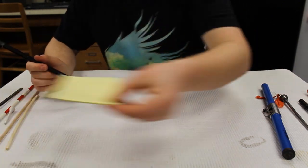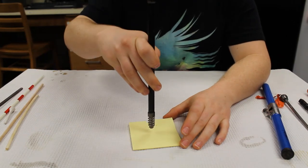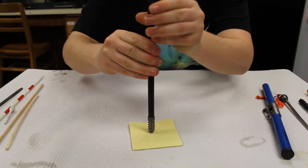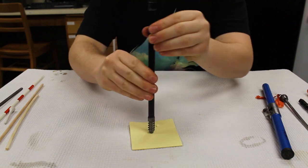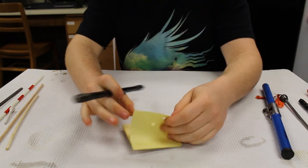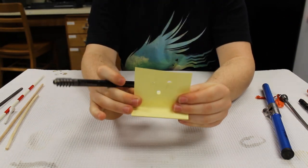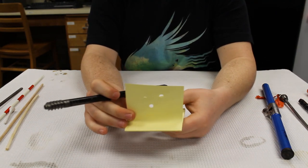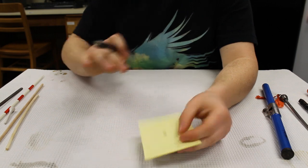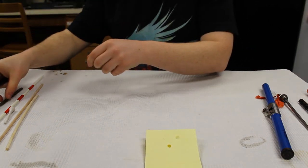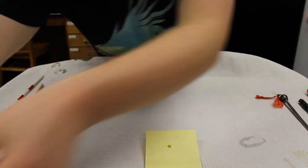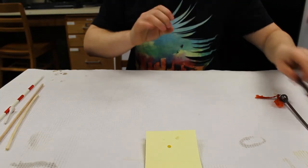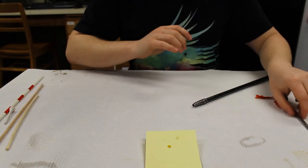Another way you can tell that you need to sharpen your increment borer is if you take a stack of paper and make circular motions. If it doesn't cut a hole like this one did pretty easily, then you really need to sharpen it. So this one is good to go. I do have one here that does need to be sharpened.